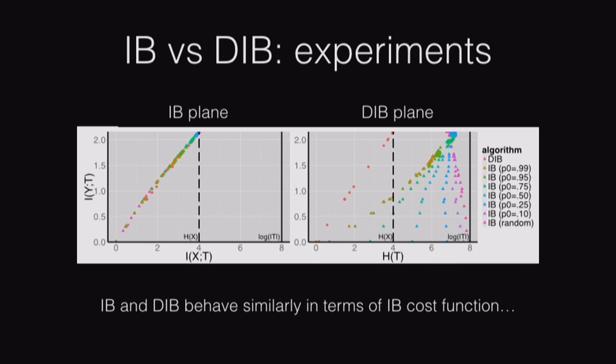In summary of these plots, the two algorithms behave similarly in terms of the IB cost function, but the DIB performs far better in terms of its own. This might differ on other data sets, but at least on what we've tried, it seems to be the case.